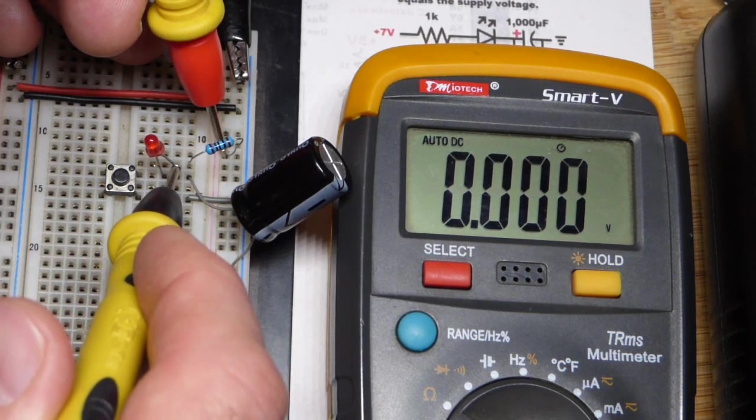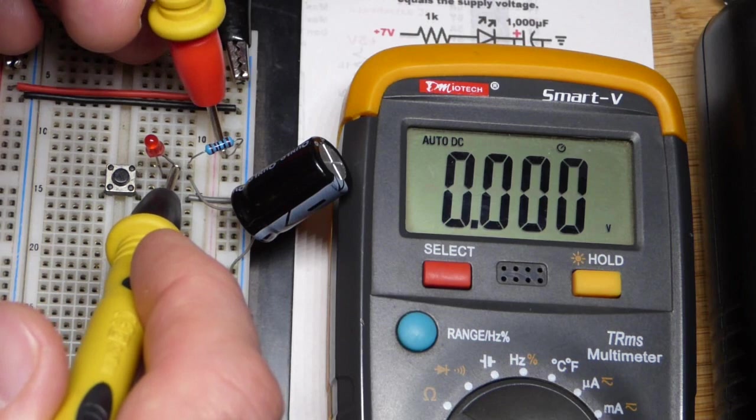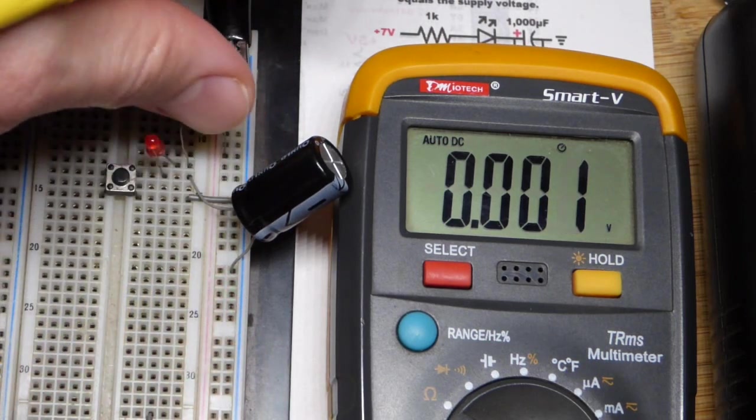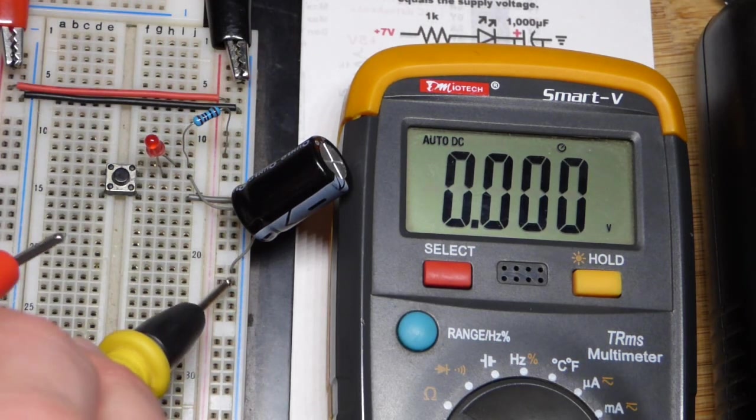And there you can see, about 0 volts across the resistor. Pretty much no current going through. 1,000 ohm resistor,